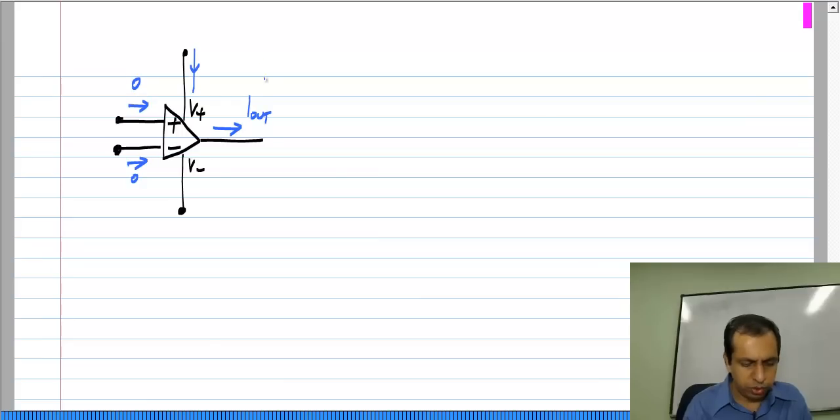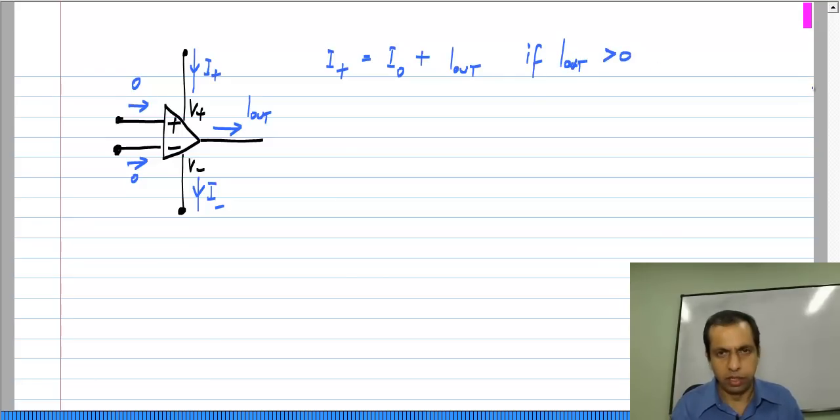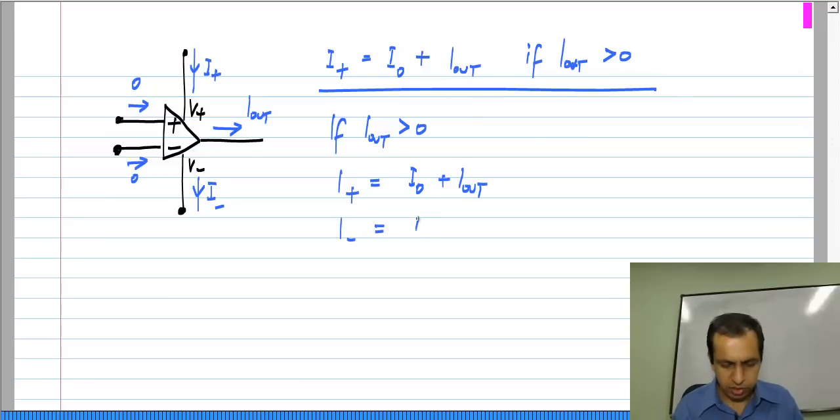The current that is going into the positive supply terminal I call it I plus, the current that is coming out of the negative supply terminal I call it I minus. Now, a very simple model for this I plus and I minus is that I plus is some fixed value I naught plus Iout if Iout is greater than zero. Rather, let me first put this condition: if Iout is greater than zero, then I plus is I naught plus Iout, and I minus is just equal to I naught.